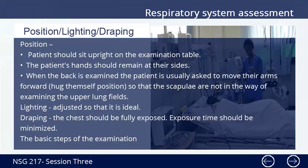Position, lighting, and draping: The patient should sit upright on the examination table with their hands remaining at their side. When the back is examined, the patient is usually asked to move their arms forward so that the scapulae are not in the way of examining the upper lung field. Lighting should be adjusted so that it is ideal. The chest should be fully exposed, and exposure time should be minimized.